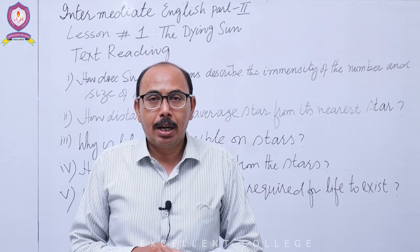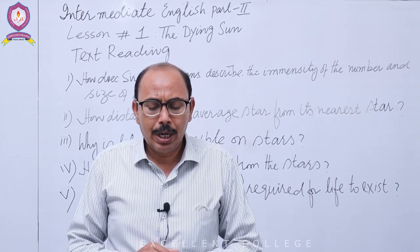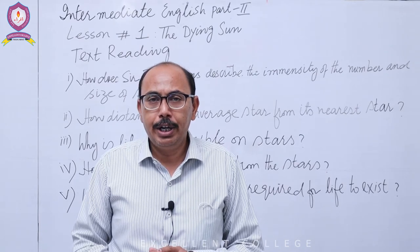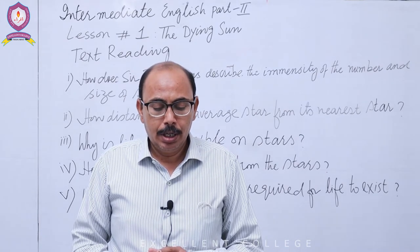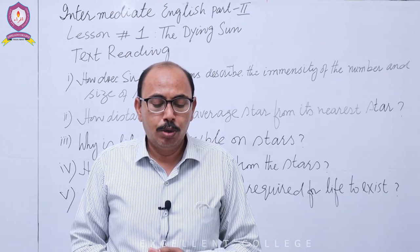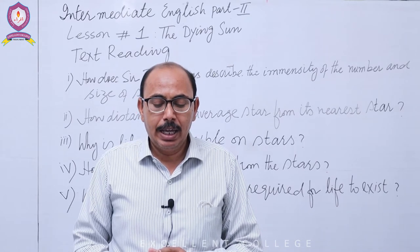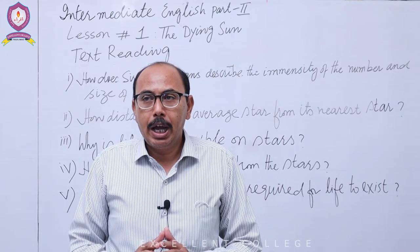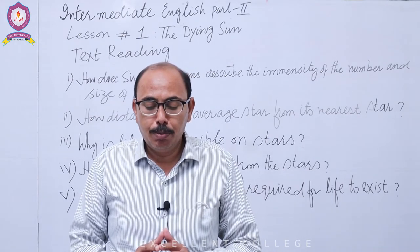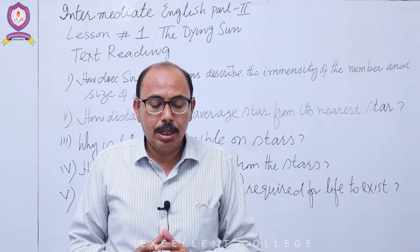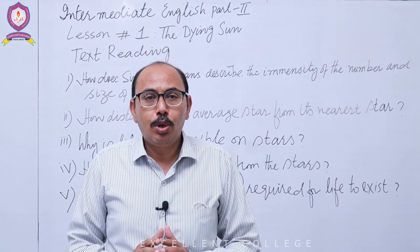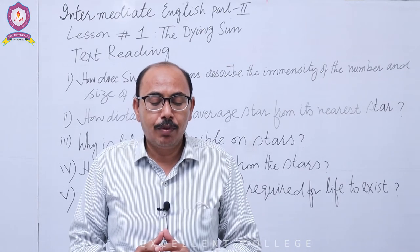پانچواں paragraph بڑا ہے — اس میں جو important حصہ ہے وہ read out کروں گا۔ اس پیرے کا آغاز 'although' سے ہوتا ہے: 'Although we cannot speak with any certainty' — اگرچہ ہم بہت زیادہ یقین کے ساتھ نہیں کہہ سکتے کہ 'in some such way as this' — یعنی نوعِ انسانی کچھ اس ہی جیسے طریقے سے وجود میں آئی۔